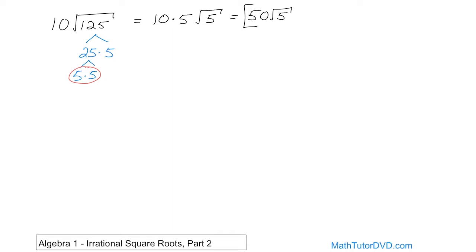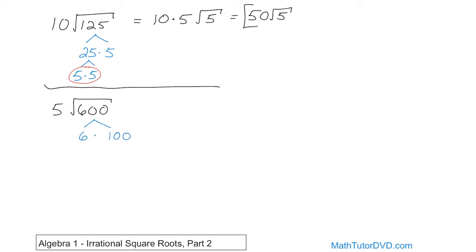All right, we'll go through these a little bit faster just because we're making some progress with your understanding. So 5 times the square root of 600. Same thing — 5 times whatever the square root of 600 turns out to be, so we write a tree. The easiest thing to do is take 6 and multiply by 100. 6 can be written as 2 times 3, and 100 can be written as 10 times 10.